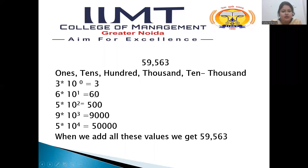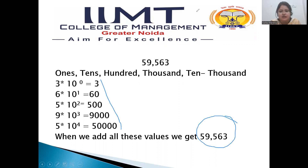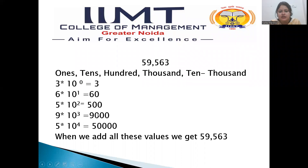When we add all these numbers, what we get is the digit 59,563. So this is decimal — basically this is the decimal number system in which the digits are increasing in the multiples of 10. This is the digit system which we use in our daily life.